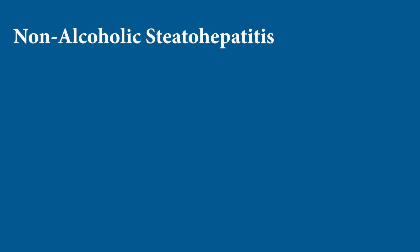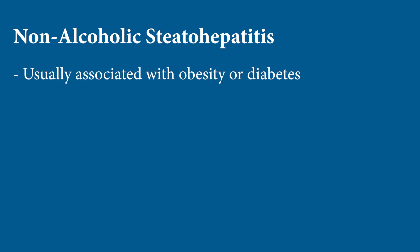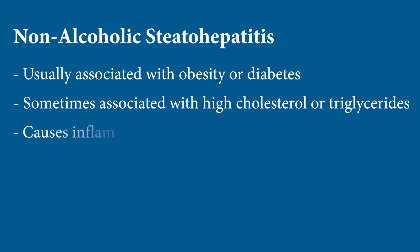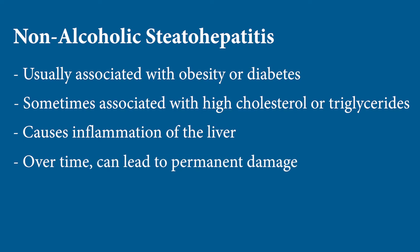Non-alcoholic steatohepatitis, which is usually associated with obesity or diabetes and occasionally high cholesterol or triglycerides in the blood, causes inflammation of the liver and over time can lead to permanent damage. This permanent damage or scarring we call fibrosis, and over time it can lead to cirrhosis. It is important to know that any condition that leads to inflammation or damage of the liver can lead to progressive scarring or fibrosis, and that fibrosis can result in cirrhosis. This is contrary to the popular belief that only people who drink excessive alcohol are at risk for cirrhosis.